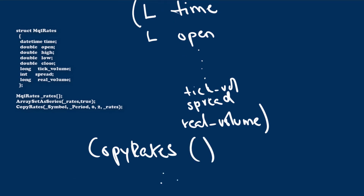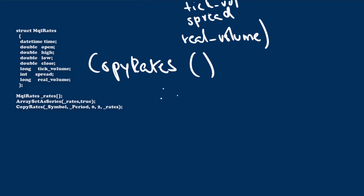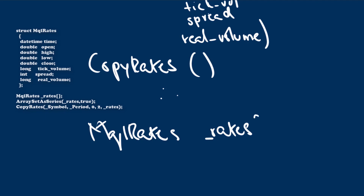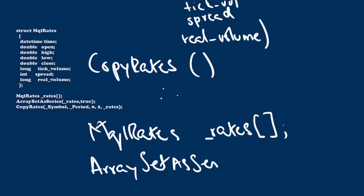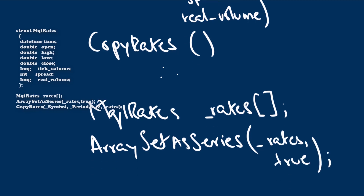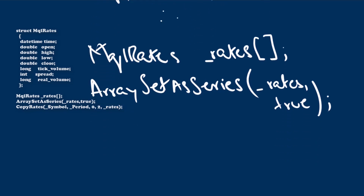To use CopyRates, first define a dynamic MQLRates array of structures — call it _rates. Next, set this array as a series object using ArraySetAsSeries set to true. This is important because we want to access data going backwards in time with zero as the current bar. Now the MQLRates structure is ready to accept information from CopyRates.